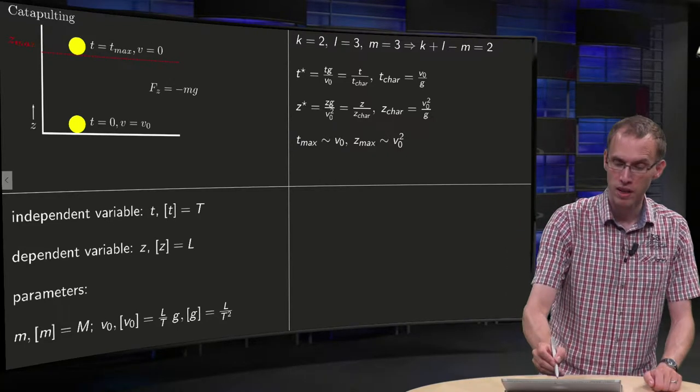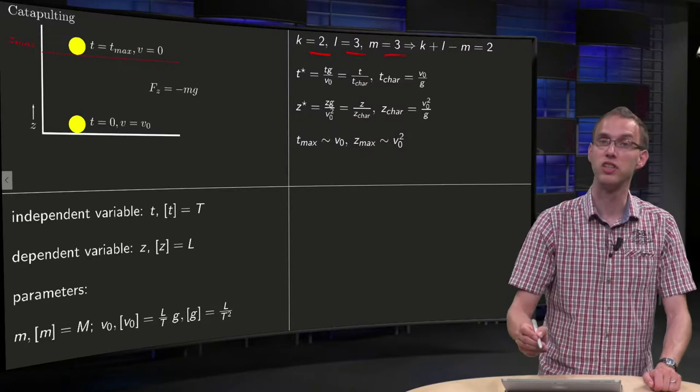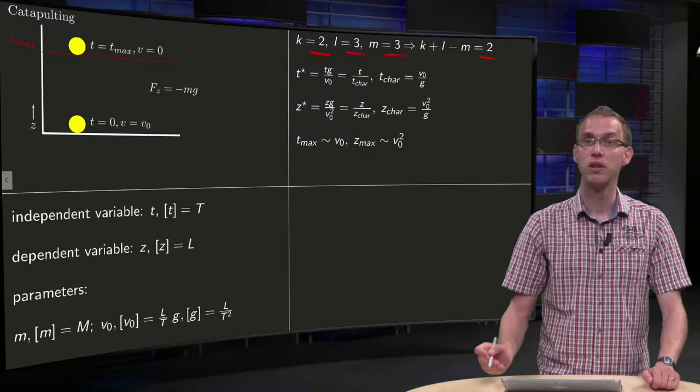So what do we see if we apply Buckingham? We have two variables, three parameters, three dimensions, so we get two dimensionless quantities.